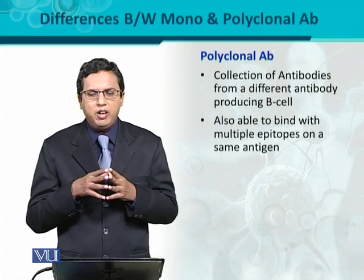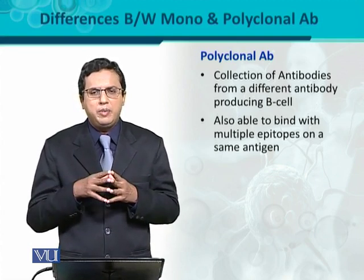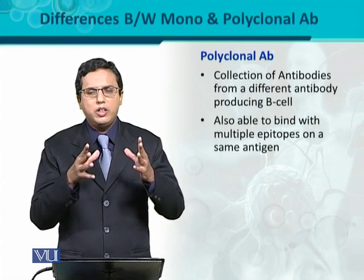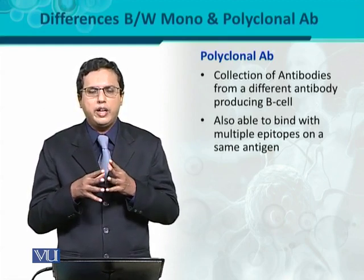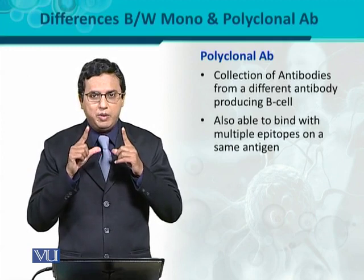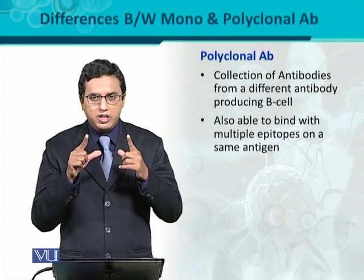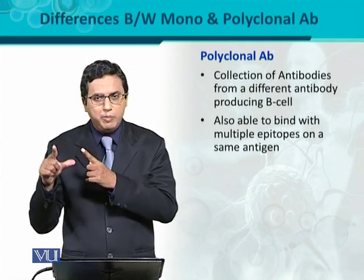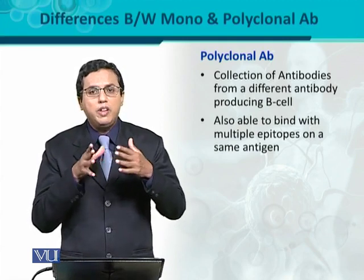Regarding the binding of polyclonal antibodies, they have the ability to bind with multiple epitopes on the same antigen. If on antigen A there are many epitopes, these antibodies have the ability to bind with those multiple epitopes. That's why they are called polyclonal antibodies — they can bind with so many epitopes, but the antigen remains the same. They would not bind with a different antigen, such as antigen B. Polyclonal antibodies bind to the same antigen but with multiple epitopes.